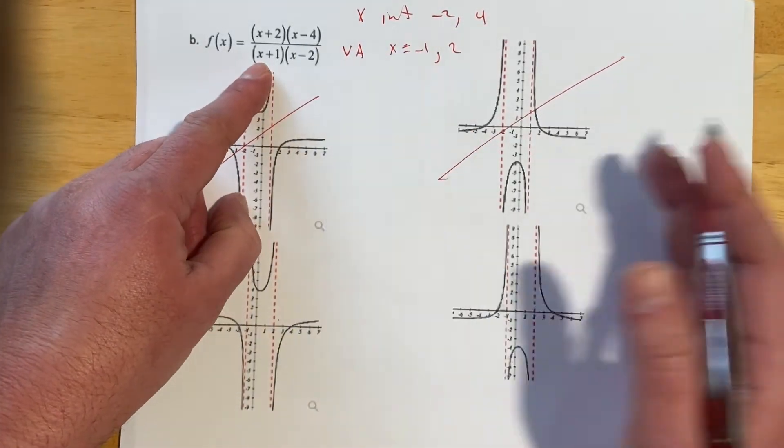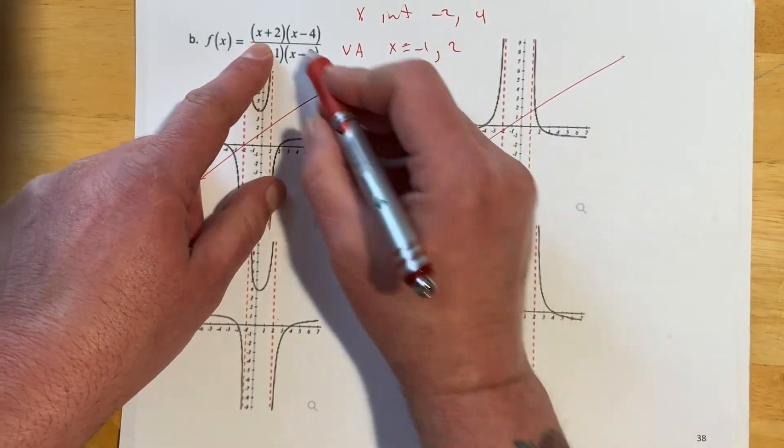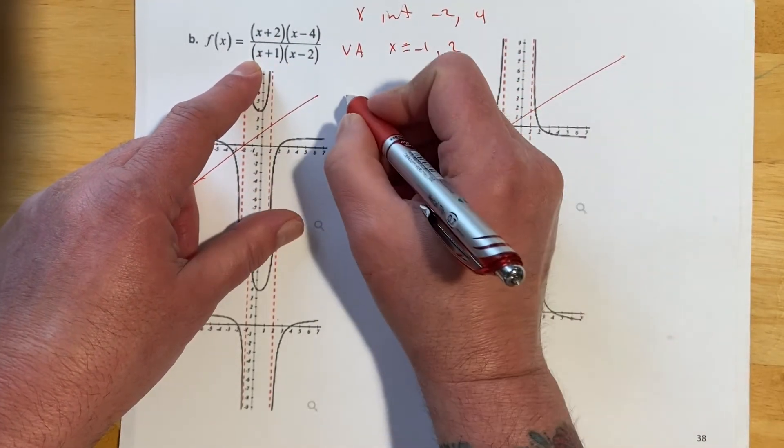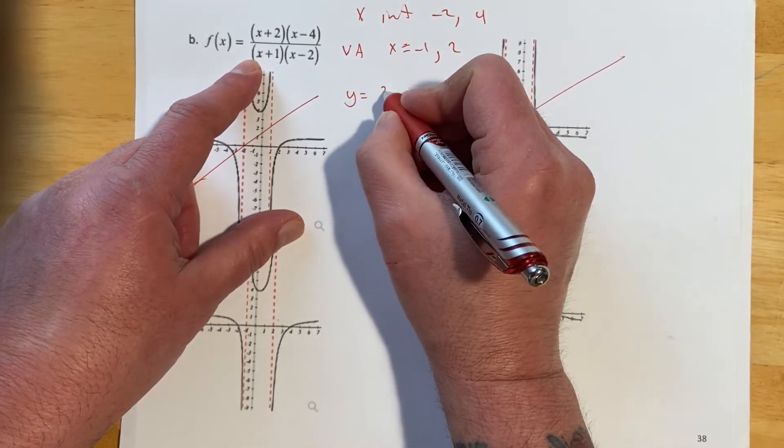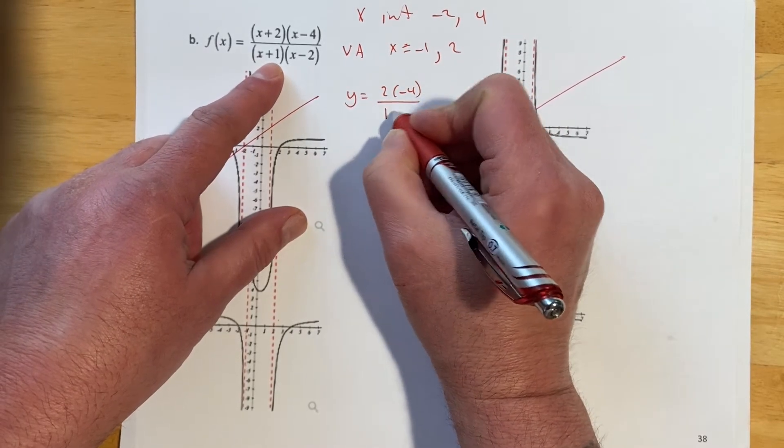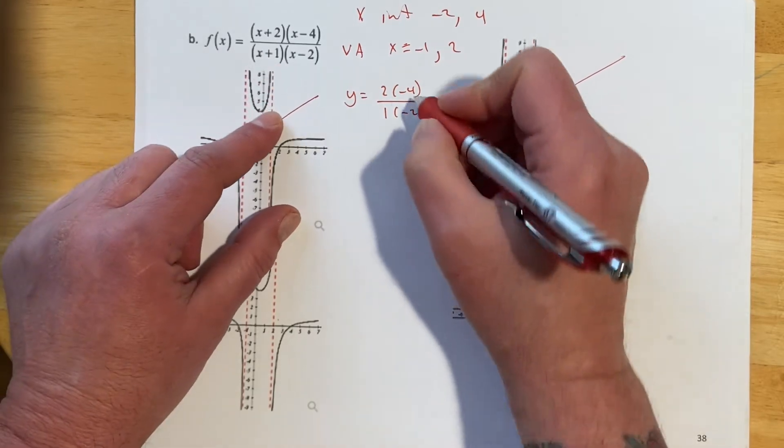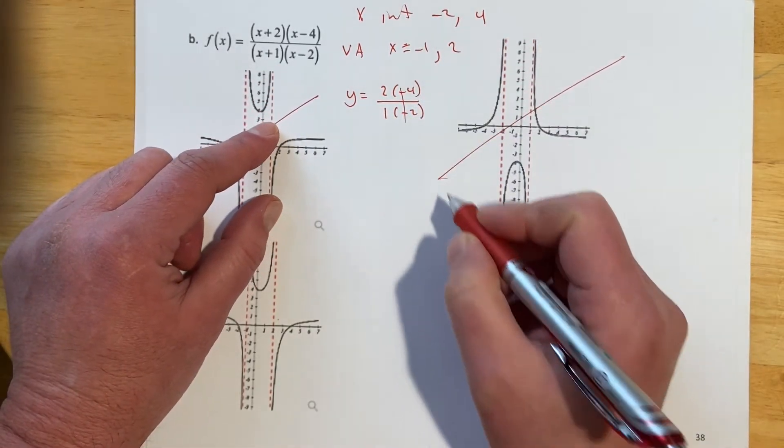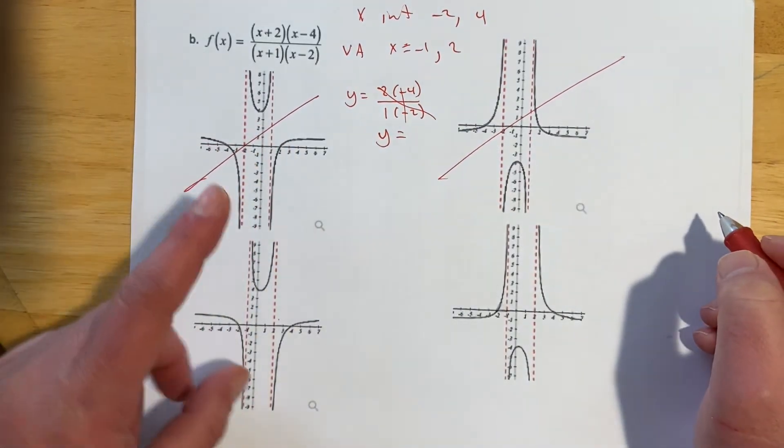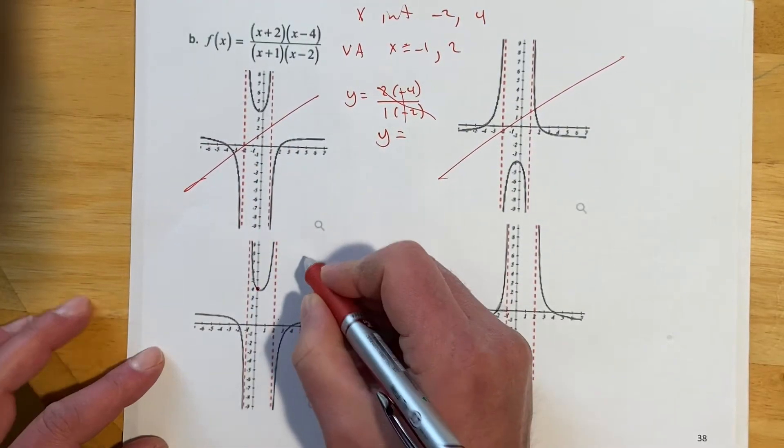So if I let X equal 0, all these little X's will drop out, and I'll have Y equals 2 times negative 4 over 1 times negative 2. So again, double negative, so it's a positive. Cancel the 2s. It looks like Y should be 4, so it makes that graph right there the 1.